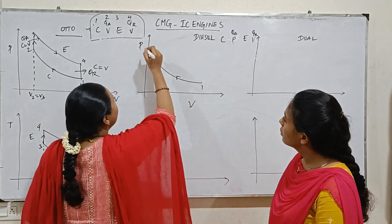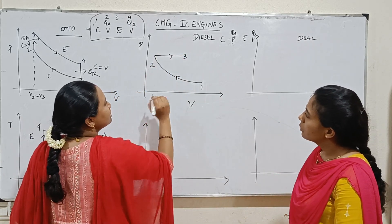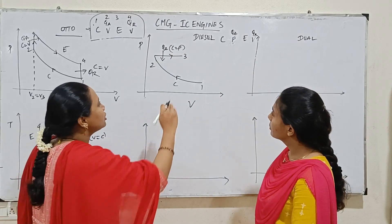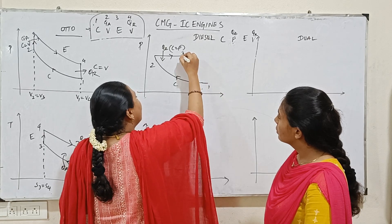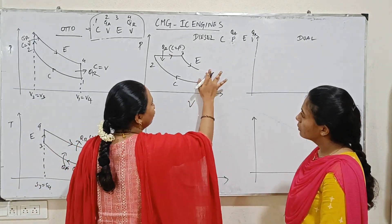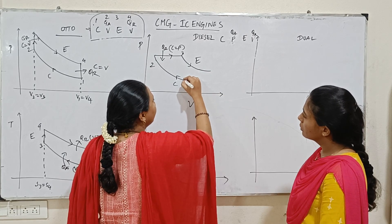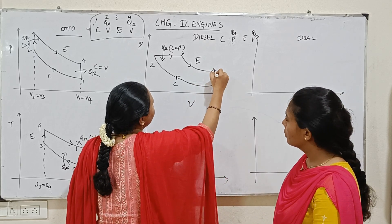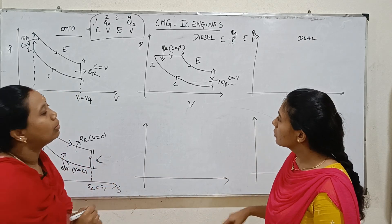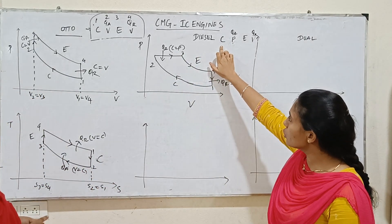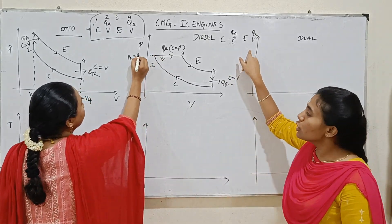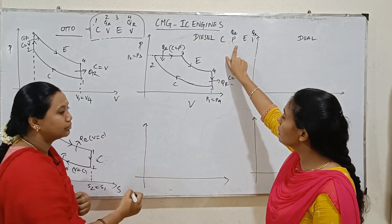Second process is constant pressure heat addition from 2 to 3. Then isentropic expansion follows, where volume increases. From 3 to 4 is constant volume heat rejection. So the Diesel cycle has isentropic compression, isentropic expansion, heat addition at constant pressure, and heat rejection at constant volume.